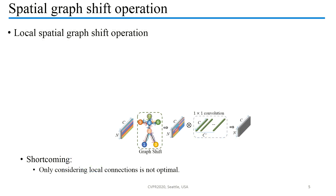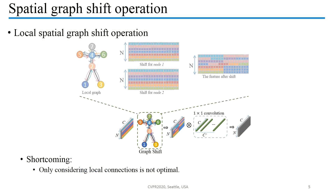In the Skeleton Graph, for a node with k neighbors, we equally divide its channels into k+1 partitions. We let the first partition retain the current feature, while the other k partitions are shifted from its neighbors' features. In the shifted feature, every node obtains information from its local receptive field. We call this local spatial graph shift.